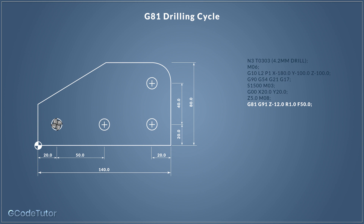Next we give it the depth of the final hole — we're going to go down to minus 12 millimeters. I'm assuming our material is 10 millimeters thick, so 12 millimeters gives us some clearance on the other side. Remember that if the material is clamped straight to the machine table you will be drilling into the table, so use a back plate, vice parallels, or fixtures as appropriate. R1 is our retract value — this is the distance the drill will retract after drilling the hole, so it retracts one millimeter above the material. Finally we give it a feed rate; we're working in metric so we'll be drilling at 50 millimeters per minute.